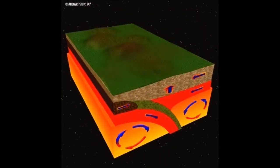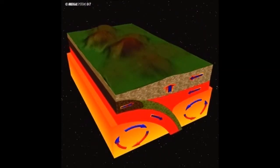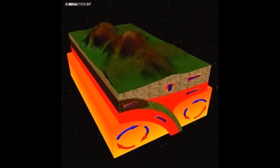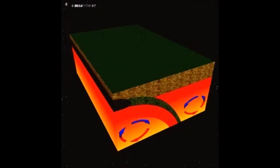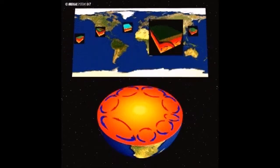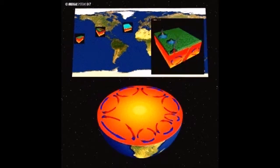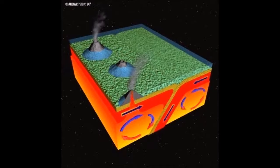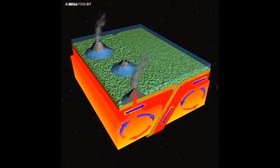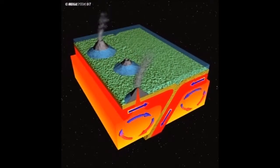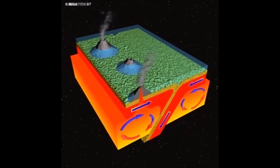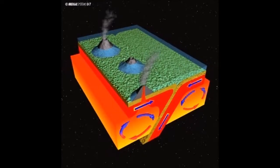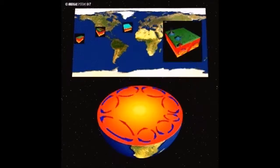Where hot material flows upwards and outwards, the plates slide past each other or separate. Where cold material sinks to the bottom, it pulls one of the plates down with it.